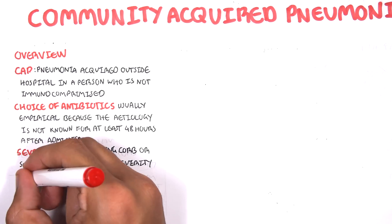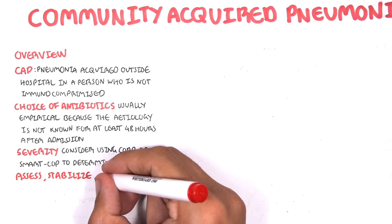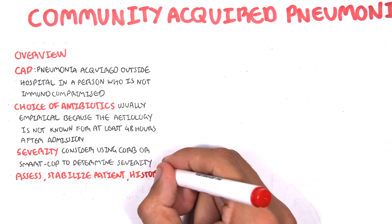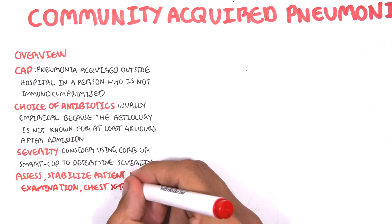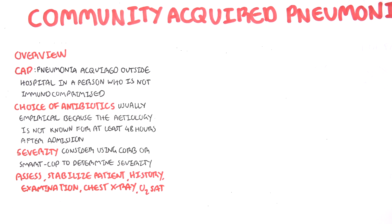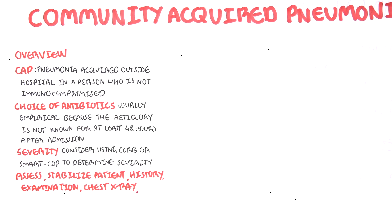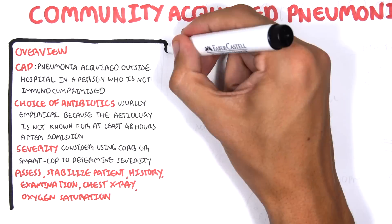What to do with Community Acquired Pneumonia? It's important to assess and stabilize the patient, take a history, examination, chest x-ray, and remember to take oxygen saturation.